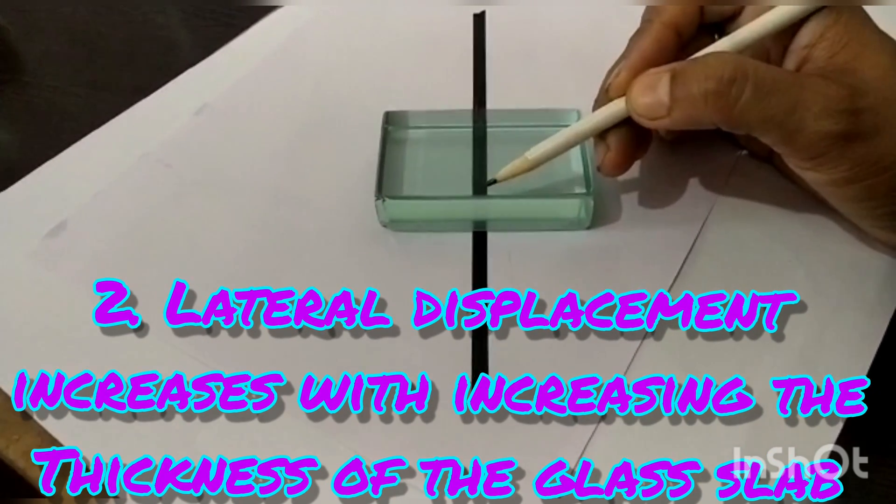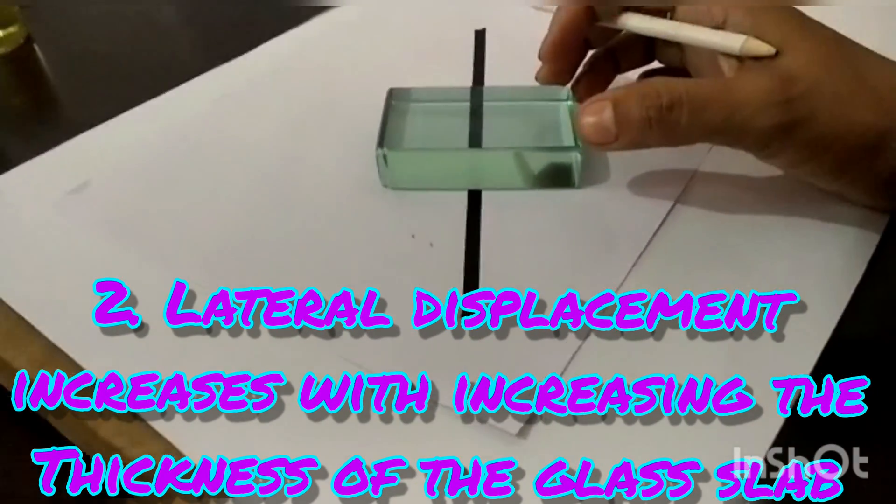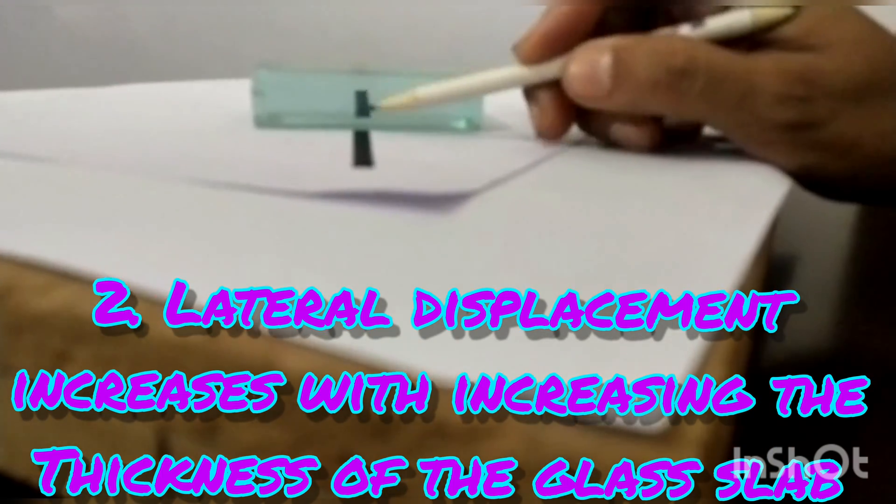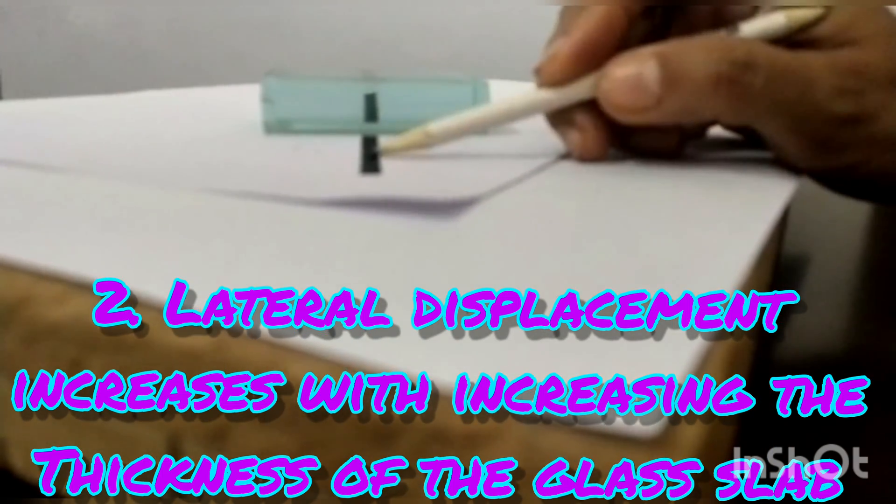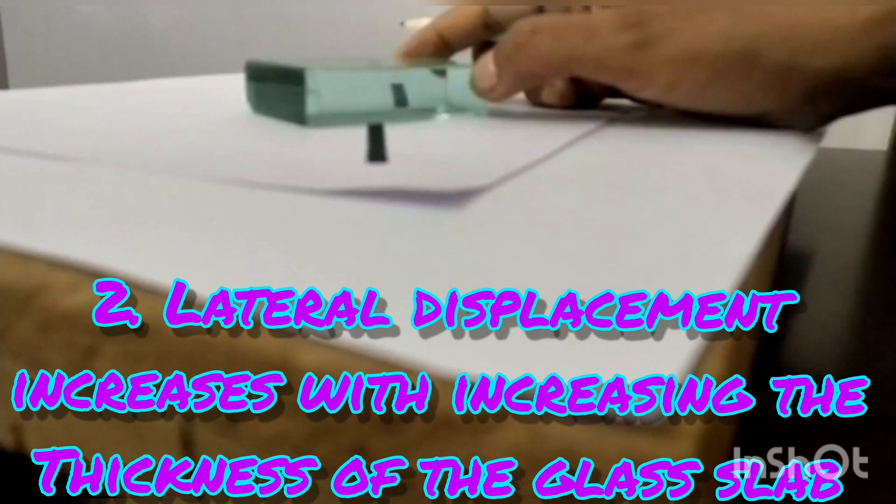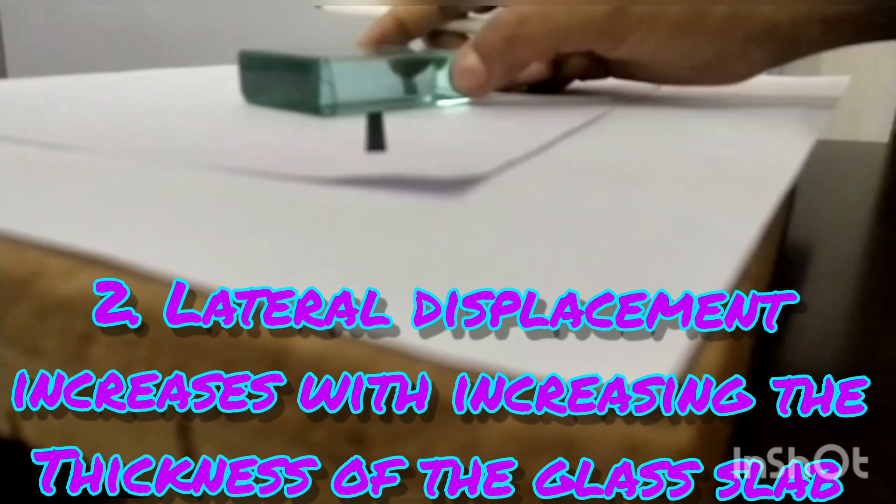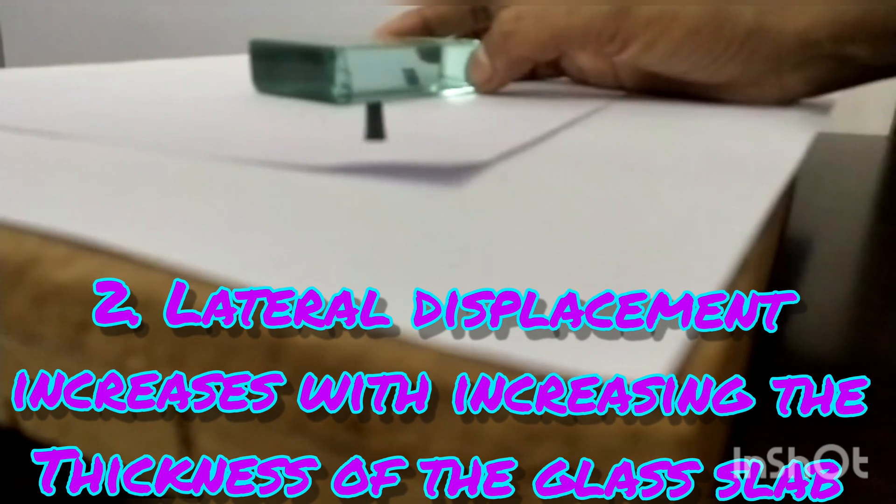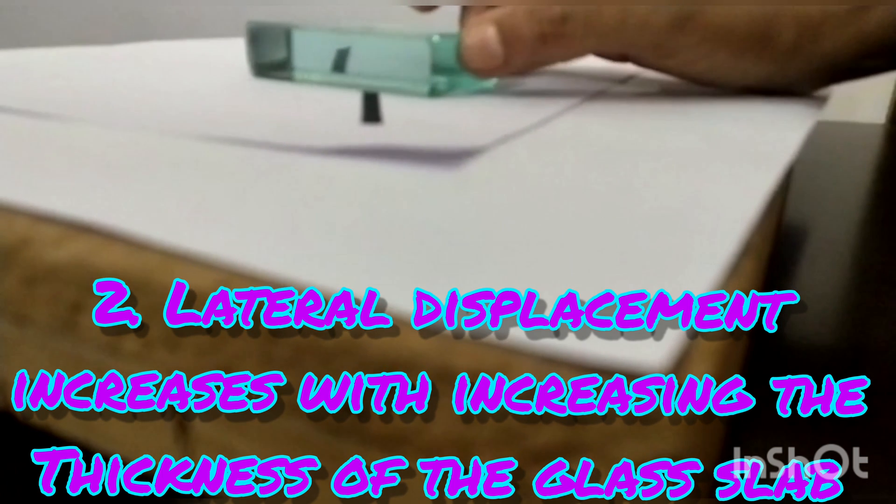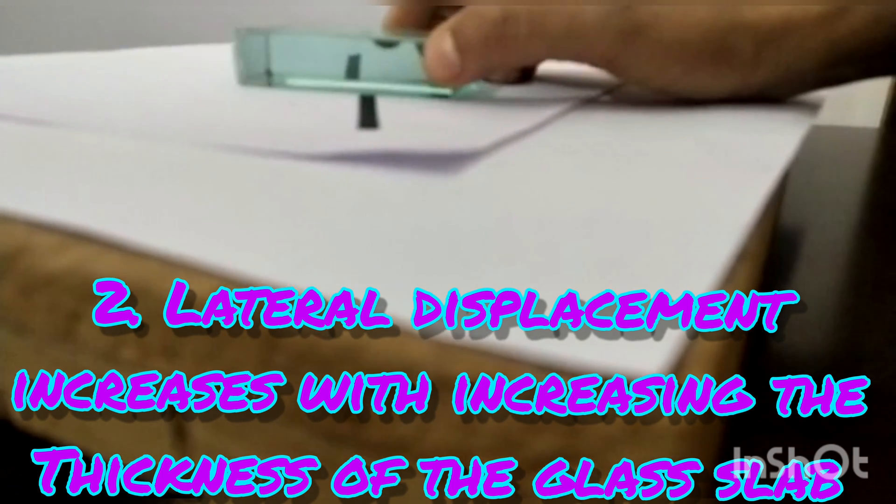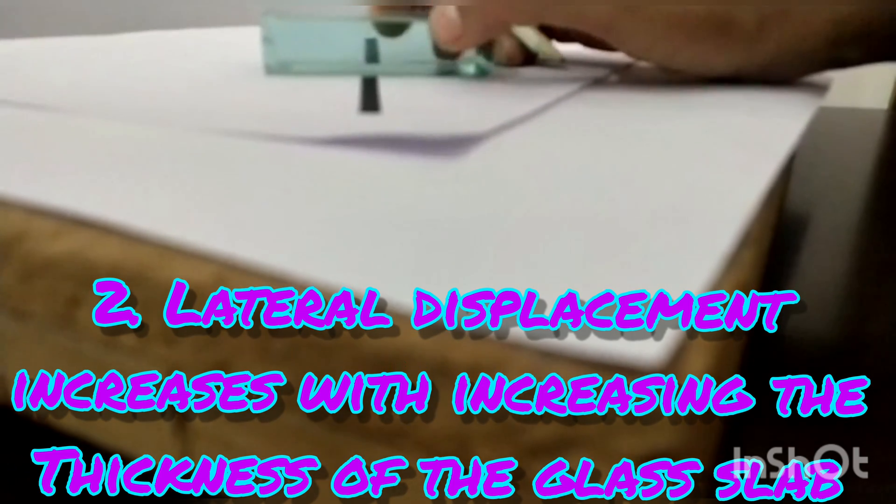Let's check this here. This is the light ray which is coming through the glass, and there's the light ray which is emergent. When I change the angle here, the lateral shift is comparatively more. We can see that there is a huge difference, and similarly that side also. It means the thickness of the glass slab is also directly proportional to the lateral shift.